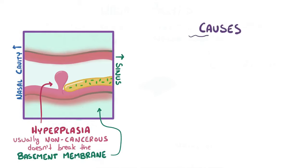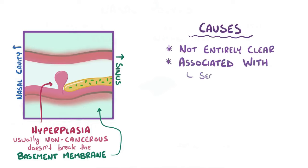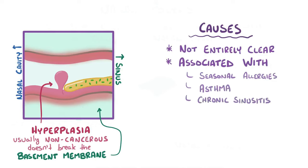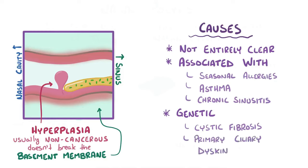The reason the epithelial cells start to grow into a polyp isn't entirely clear, but they're associated with seasonal allergies, frequent asthma exacerbations, and chronic sinusitis. There are also genetic factors involved — for example, individuals with cystic fibrosis and primary ciliary dyskinesia both have a high risk of developing nasal polyps.